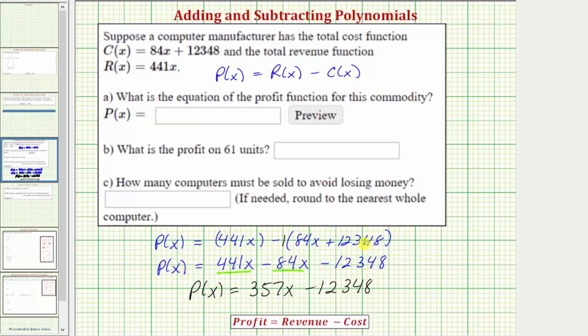So P(x) equals 441x minus 84x is equal to 357x and we have minus 12,348. So this is our profit function. Notice how we already have P(x) equals so we only enter the right side of 357x minus 12,348. Now let's answer part b and c on the next slide.